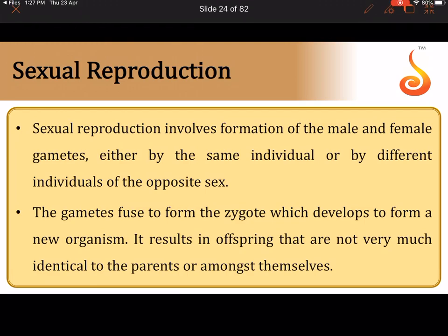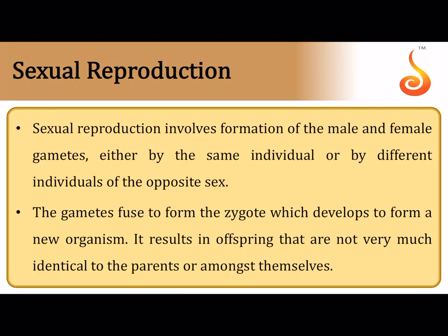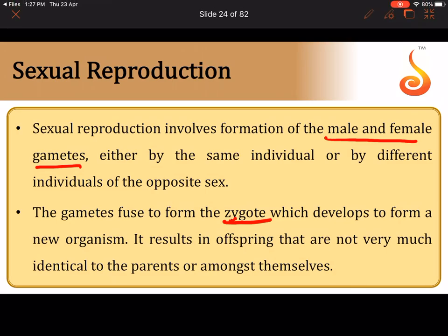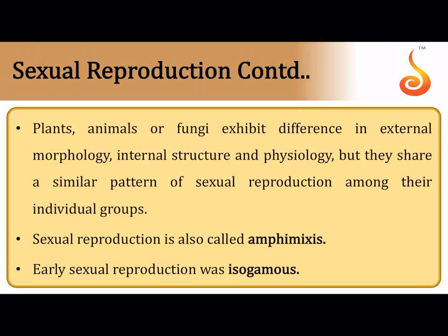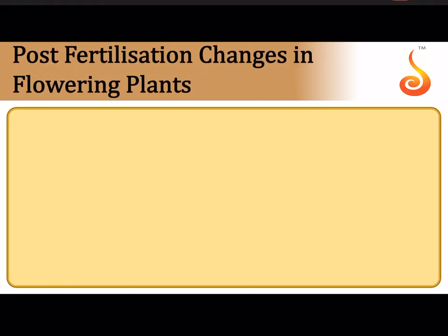In sexual reproduction, male and female gametes are formed and they fuse, resulting in a diploid zygote. It involves both gamete formation and syngamy. Amphimixis or syngamy is the fusion of the male and female gametes to form a diploid zygote — this process is referred to as amphimixis or syngamy.